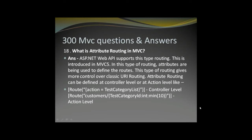What is attribute routing in MVC? ASP.NET Web API supports this type of routing, which was introduced in MVC 5. In attribute routing, attributes are used to define the route. This gives more control over classic URL routing. Attribute routing can be defined at the controller level or at the action level.